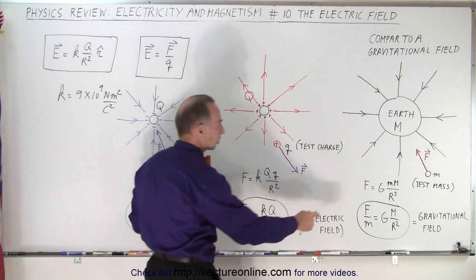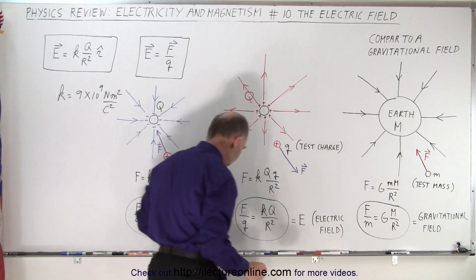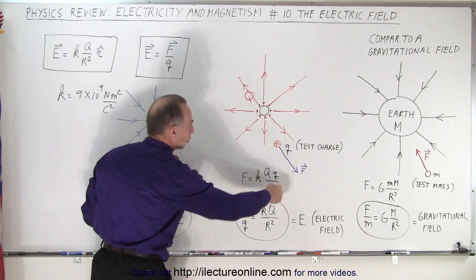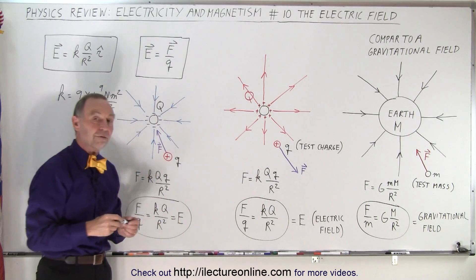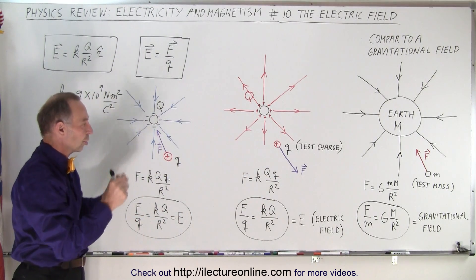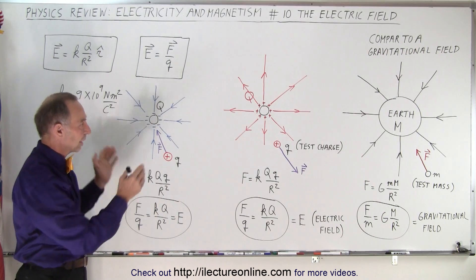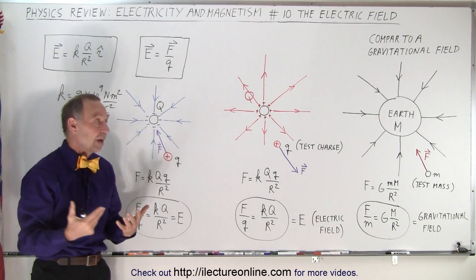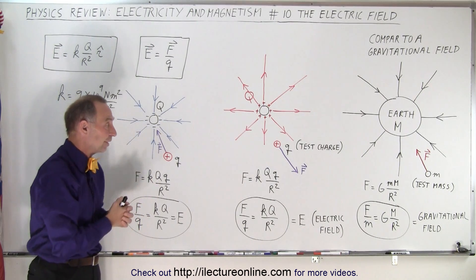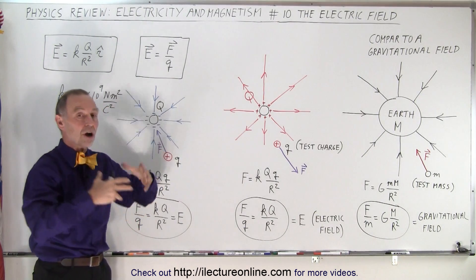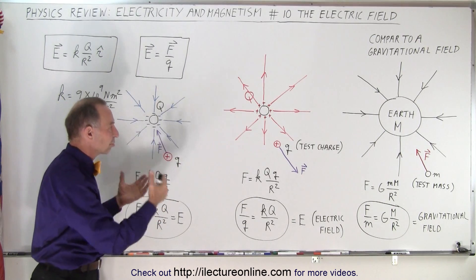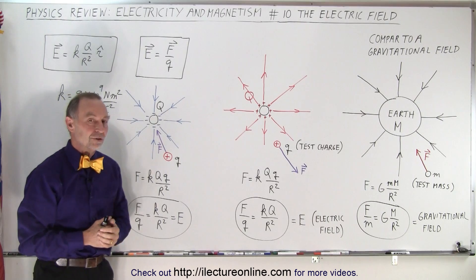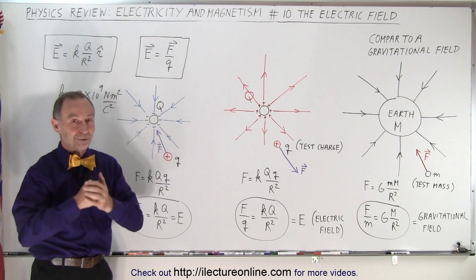So just like we have the gravitational constant with gravity and the Earth, we have K used in Coulomb's law. That hopefully gives us a good insight into what an electric field is, how it's defined, how we know the magnitude of the field at any point away from a charge causing a field, and what the direction of the field is — caused by either positive charges or negative charges. And that is the electric field.